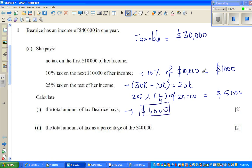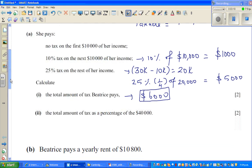Again, 10% is one tenth, which is $1,000, and 25% of $20,000, which is half and again half. So half of $20,000 is $10,000 and half of $10,000 is $5,000. The total tax she pays is $6,000.